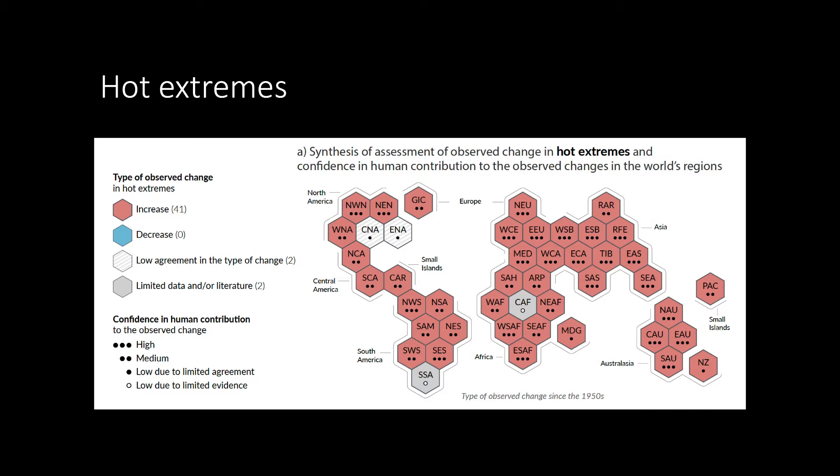Three dots represents high confidence, two dots represents medium confidence, and one dot represents low confidence. Note that in the SEA region for Southeast Asia, there has been an increase in hot extremes, and there is a high confidence that this increase is due to human influence.